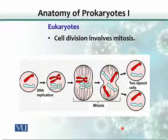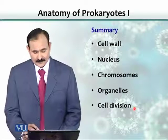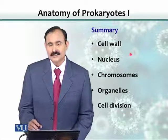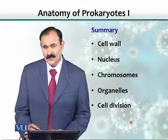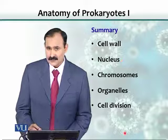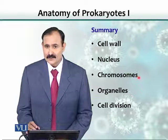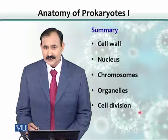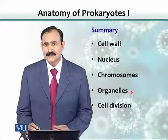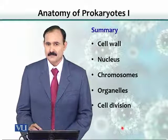In mitosis, the cell multiplies its DNA, the chromosomes align onto the equatorial plate, and then they get separated into two cells. In summary, there are differences in the cell wall — in prokaryotes it is peptidoglycan, in eukaryotes it is either cellulose or chitin. The nucleus is well defined in eukaryotes but not in prokaryotes. Chromosomes are mostly circular in prokaryotes, but linear and multiple in eukaryotes. Organelles are only present in eukaryotic cells, and cell division is mitosis in eukaryotes versus simple binary fission in prokaryotes.